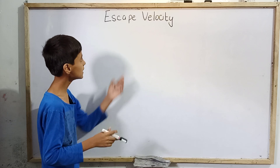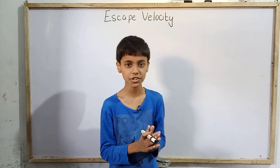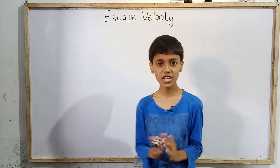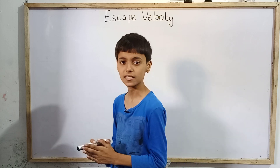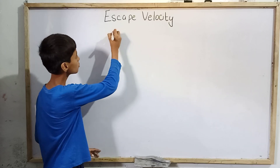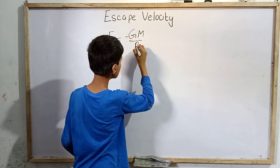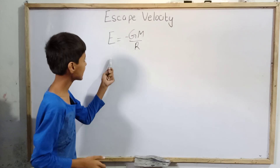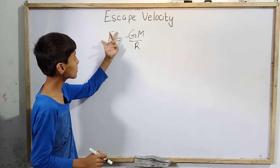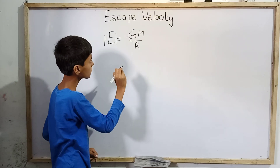Binding energy — since we know the total mechanical energy of any particle is the total kinetic energy plus total potential energy supplied to any particle. So what is binding energy? If we write the total mechanical energy as minus GM divided by r, since we know this is the total mechanical energy supplied to any particle: minus GM by r.